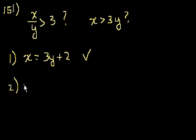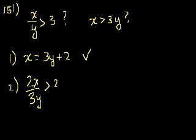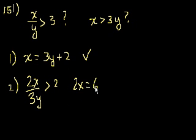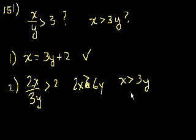Statement 2: the ratio of 2x to 3y is greater than 2. We know 3y is positive, so multiplying both sides doesn't switch the sign. You get 2x greater than 6y. Divide both sides by 2 and you get x is greater than 3y. So statement 2 and statement 1 say the same thing — statement 2 alone is also sufficient. Either statement alone is sufficient to answer the question.